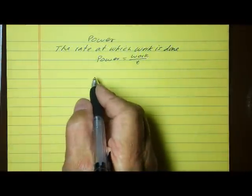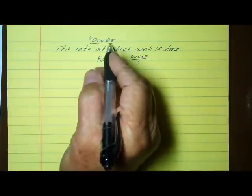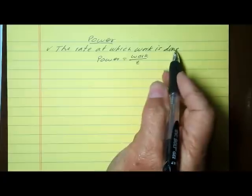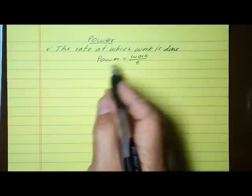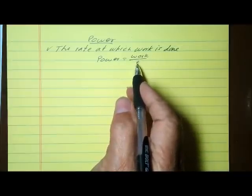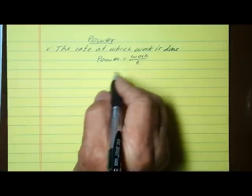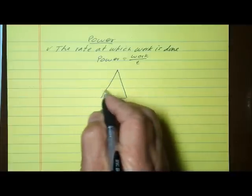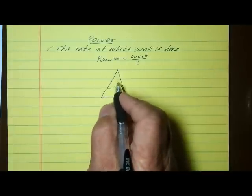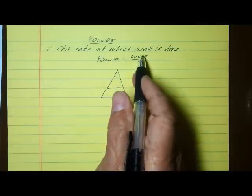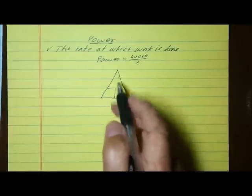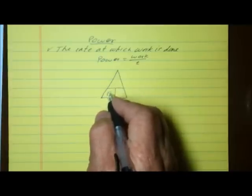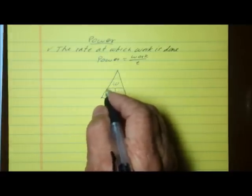We're going to talk about power. By definition, power is the rate at which work is done, which means the equation for power is power equals work divided by time. We can set this up using the magic triangle to help us rearrange the equation to solve for either power, work, or time depending on the variables given in a problem.